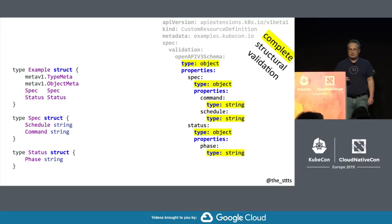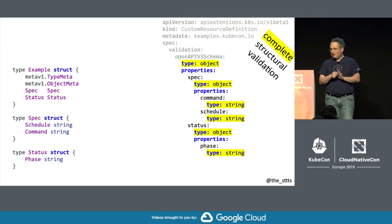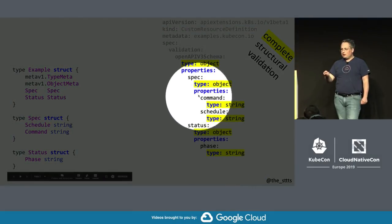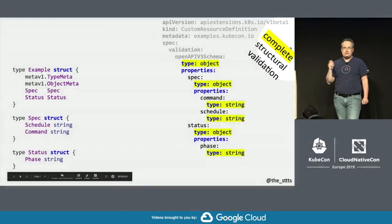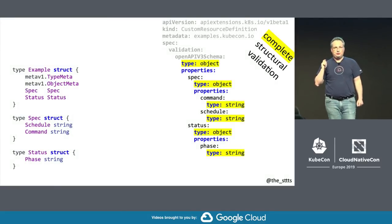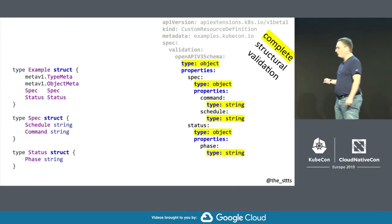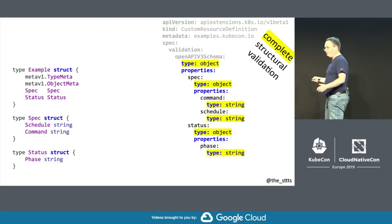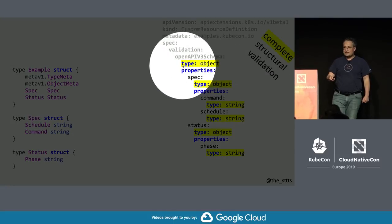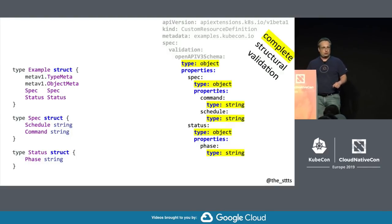Structural validation — the structural term is really the core of the talk. It's very important for the future of CRDs. Complete means from the structure, we not only know the field names, we also know the types. So for every field, for every item, for everything which is structurally specified, if there's a type as well — just one type, not two — then we call it complete.